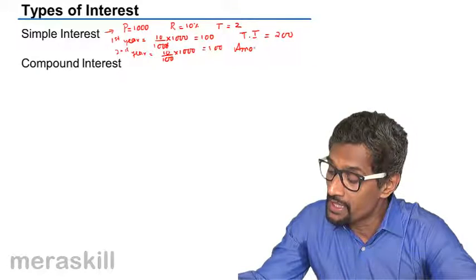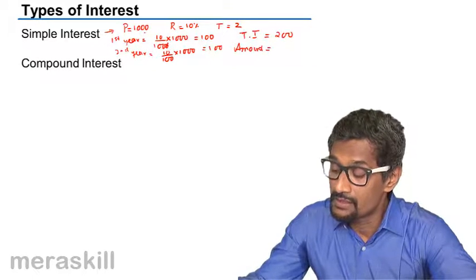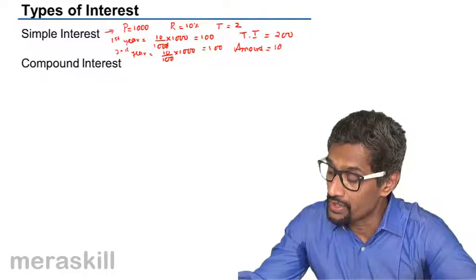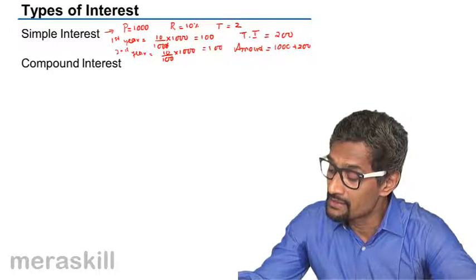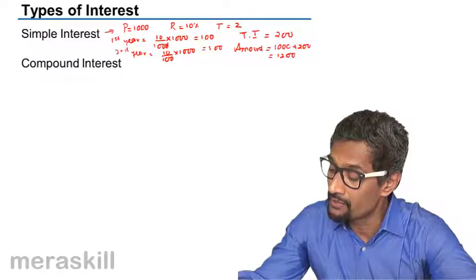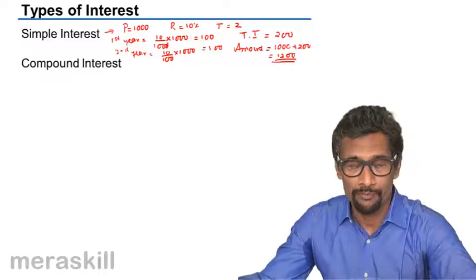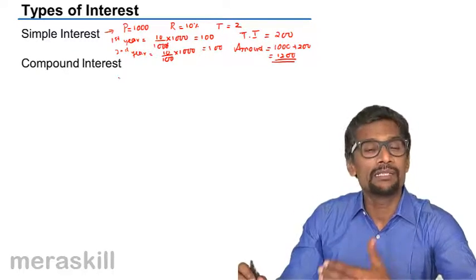So amount would be 1000, that is at the end of the two years, there will be 1000 plus this 200 as interest, so it turns out to be 1200 as the amount.